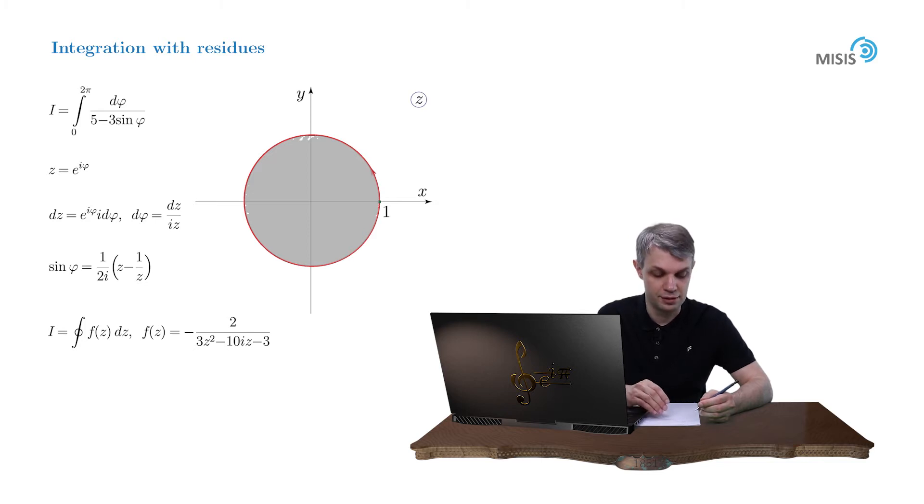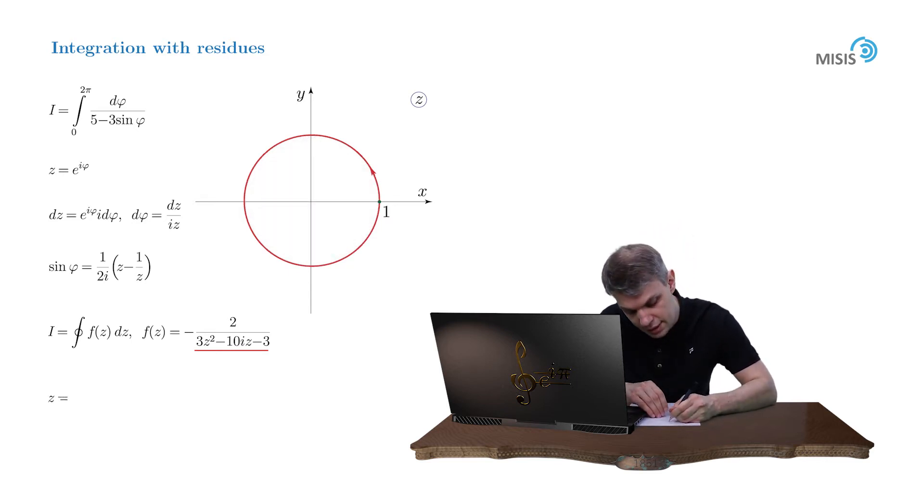Now let's find the poles of our function, which are simply the zeros of our denominator. In the denominator we have a quadratic polynomial, and its roots are z equals 3i and z equals i over 3. Those are first order roots and that means they are simple poles of our function.